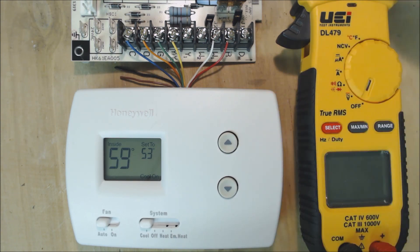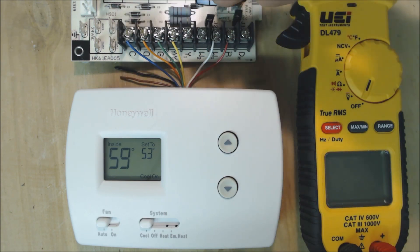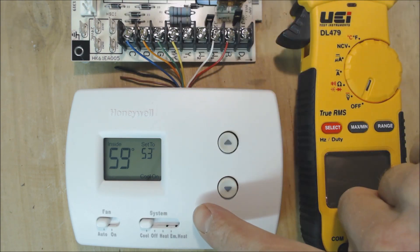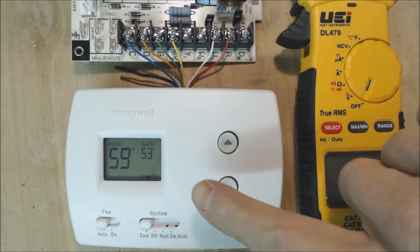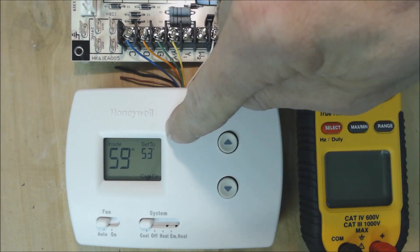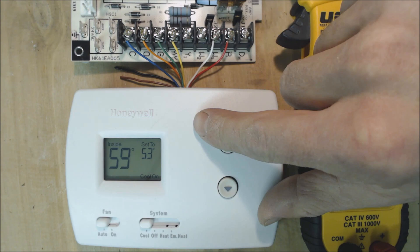Right now we have this air handler control board plugged in, and we are sending 24 volts to the thermostat. This R wire is 24 volt power that goes to the thermostat and supplies power, and it finds its way back through the common wire, which is C. So that's how the thermostat is being powered.